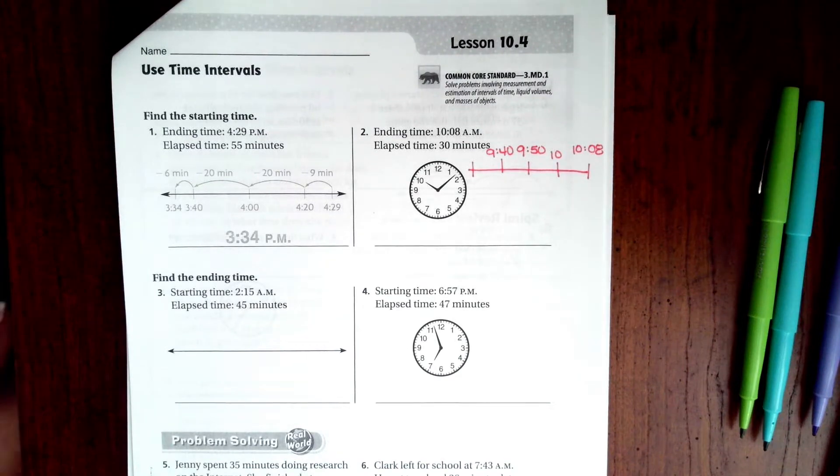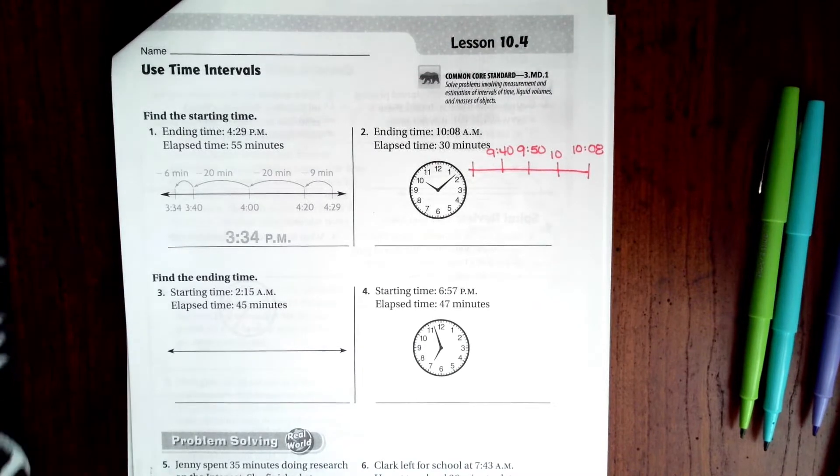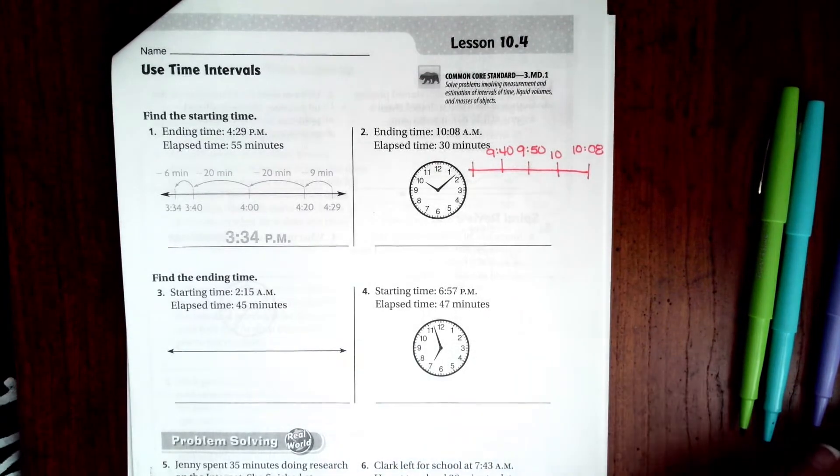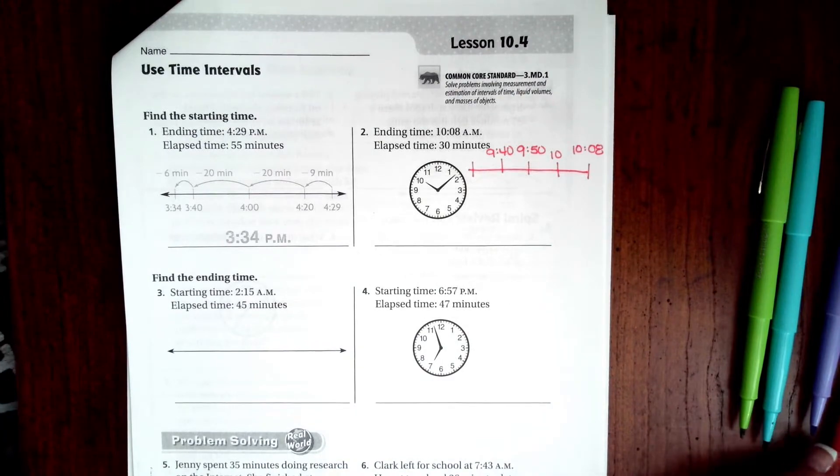Hi guys, welcome to third grade, chapter 10, lesson 4. We're going to go ahead and get started with number 2. Now you'll see that I did a little number line. I did it backwards this time. I'm going to show you how to do it forwards on the next one.